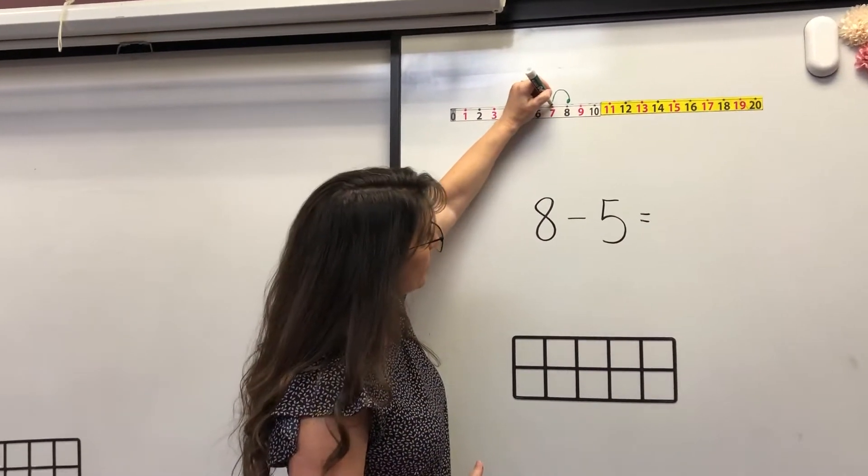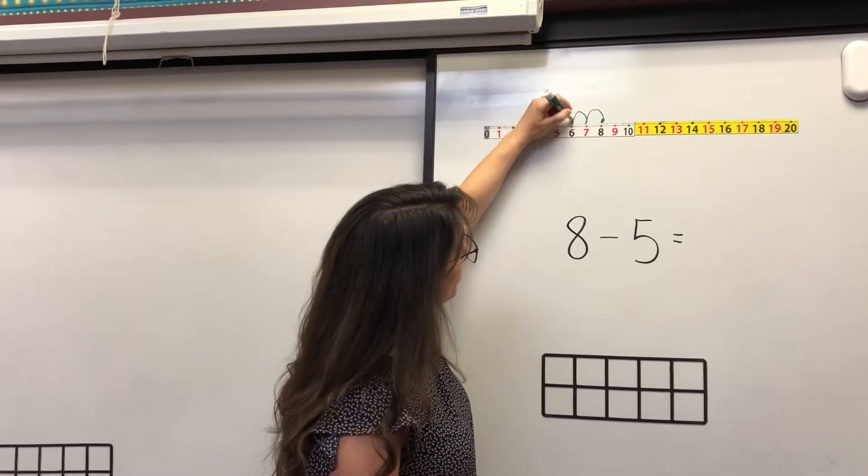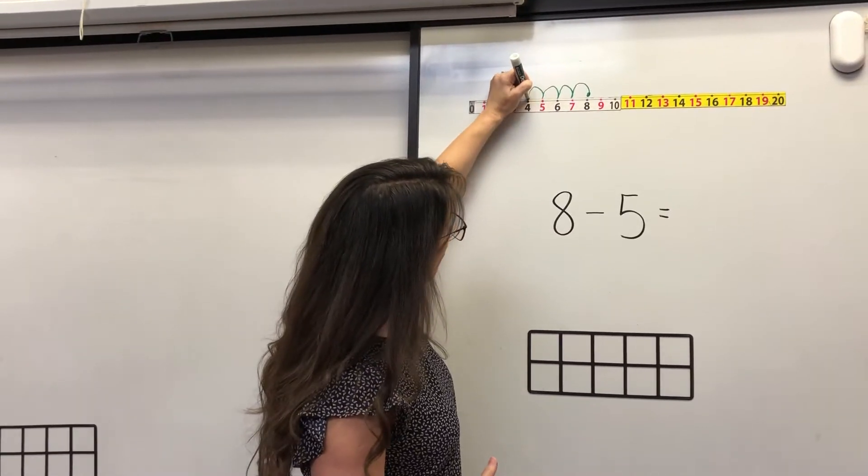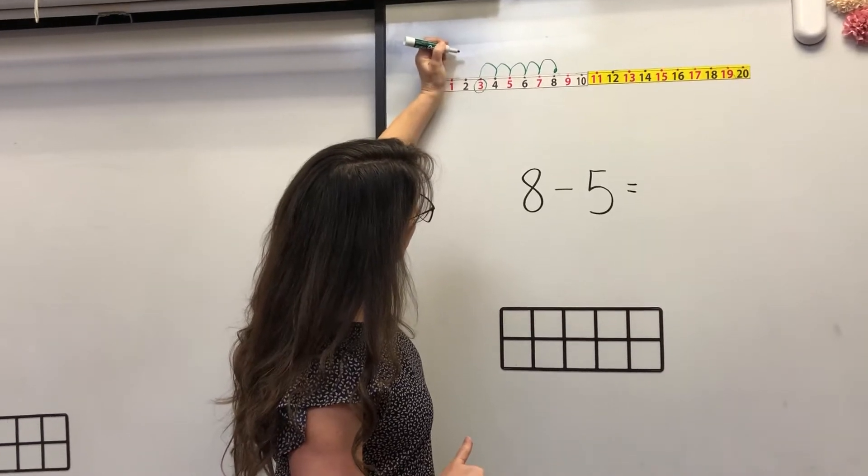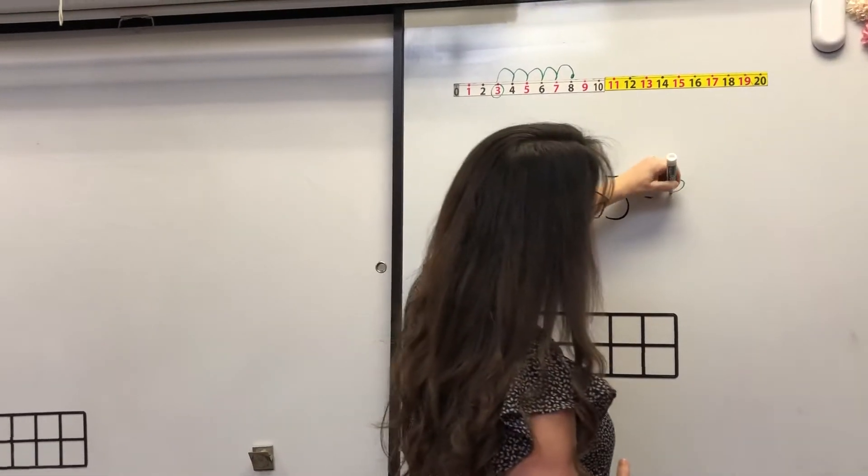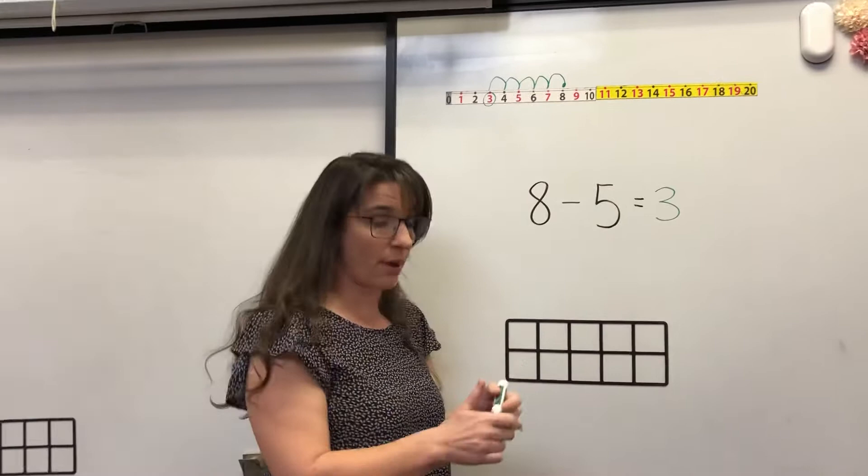You go one, two, three, four, five. What number did we land on? Three. And so three is the correct answer.